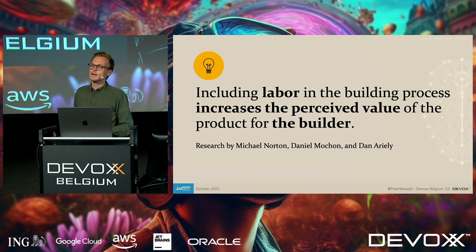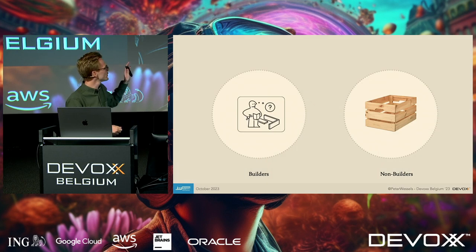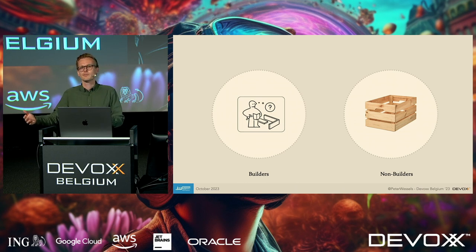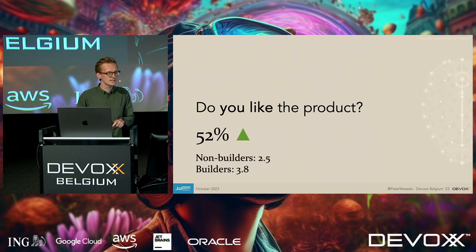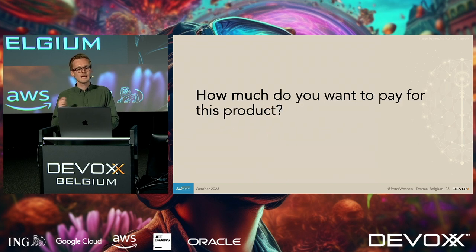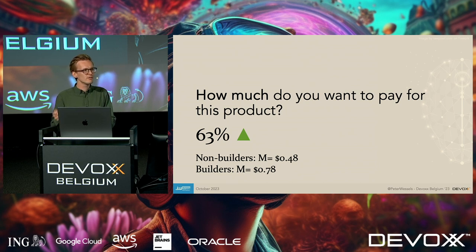They ran an experiment with an actual IKEA product, with two groups: builders and non-builders. The builders assembled the product themselves, while the non-builders received the box pre-assembled. They asked two questions. First, 'Do you like the product?' on a scale of zero to five — builders liked the product 52% more than non-builders. Second, 'How much would you pay for this product?' — builders wanted to pay a 63% premium for the box they assembled.